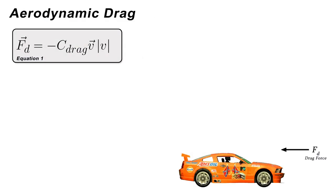Equation 1 shows a formula for calculating our drag force vector Fd, where C_drag is a constant and v is our car's velocity vector. Note that the single bar on either side of the second v term indicates that this refers to the magnitude of our velocity vector.